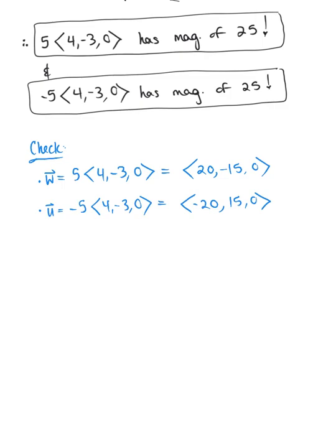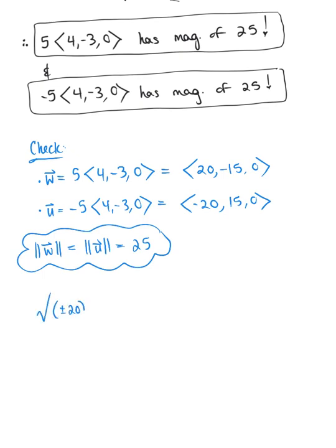So here we go, we want to verify that the magnitude of vector w equals the magnitude of vector u, which equals 25. So let's plug these coordinates into our distance formula. So we have the square root of plus or minus 20 squared, plus plus or minus 15 squared, plus 0 squared.